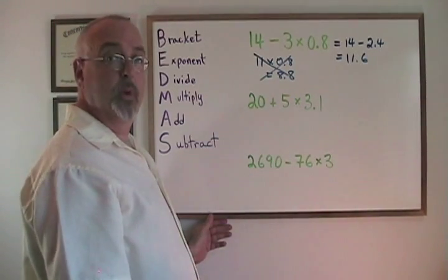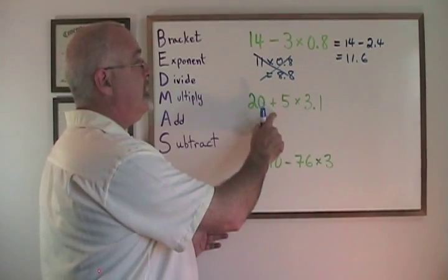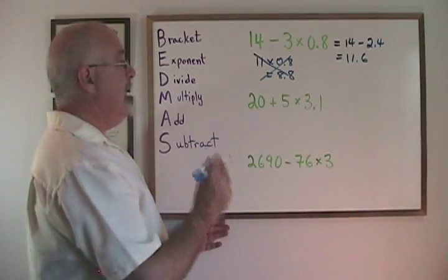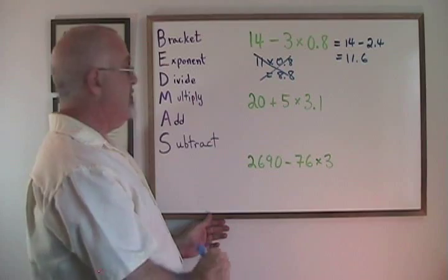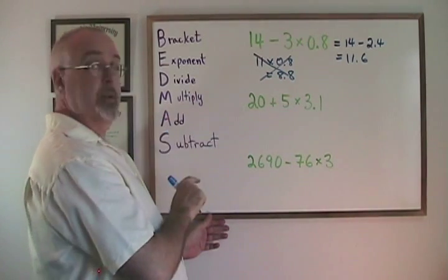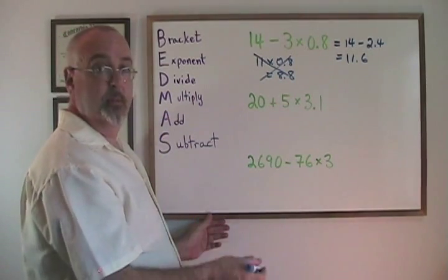20 plus 5 times 3.1 works the same way. It's an addition and a multiplication. We have to do the multiplication before the addition. M for multiply comes before A for add in BEDMAS.